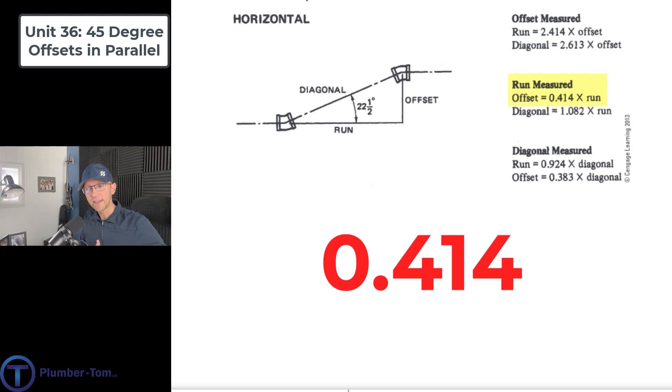Let me point out that on our diagram, the spread is going to be the same as the run on this triangle. So the spread on these are always going to be given to us. This is how far apart we want our pipes. We can simply take that spread, multiply it by 0.414, and it's going to give us that missing piece, the piece that we need to either add or subtract. Boom. There it is.